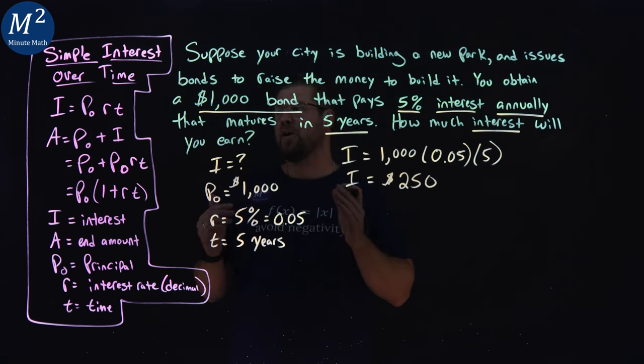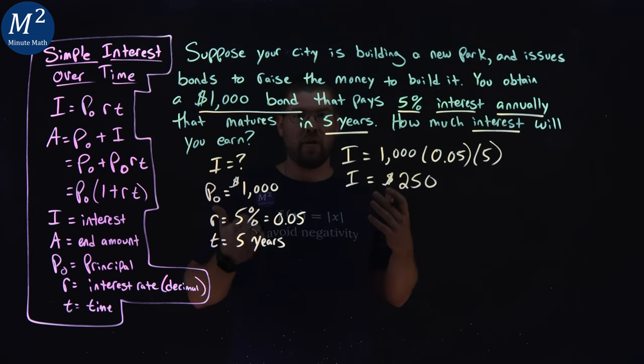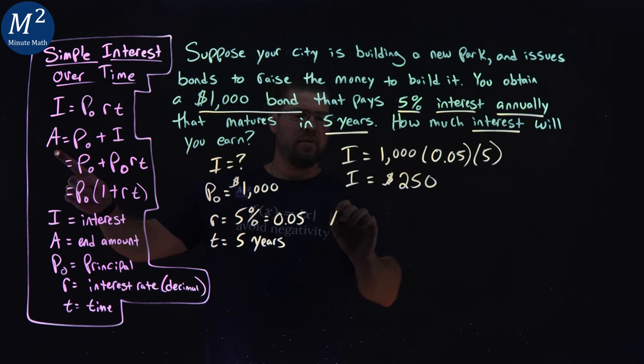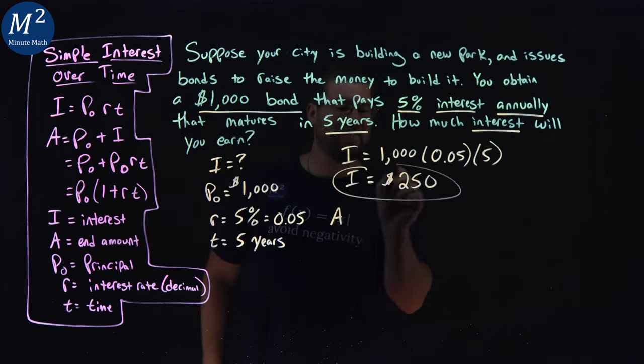If we wanted to calculate how much total we would have amounted over all the five years, we use the second part of the formula. But that's not what the question's asking. So the question asks just for the interest. That's our answer, just to clarify.